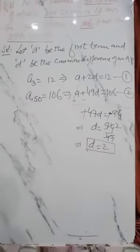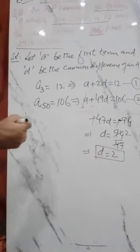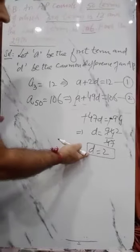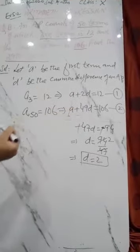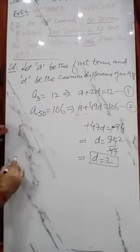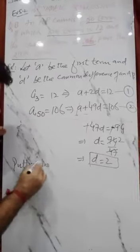Now we have found d. What will we do now? Just like in question number 7, we'll put the value of d in either the first or second equation, that's your choice. So putting the value of d = 2.